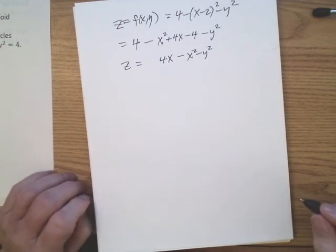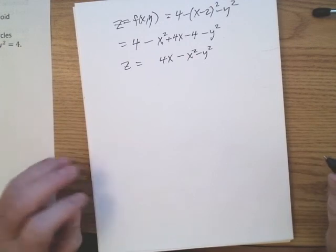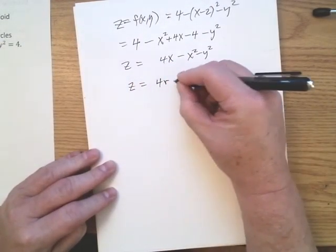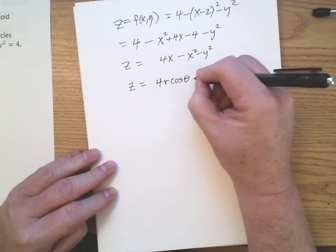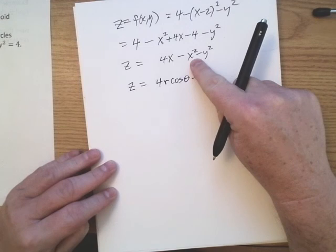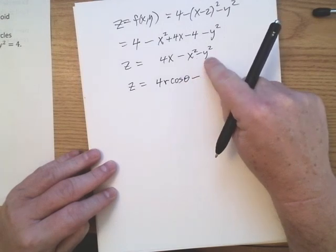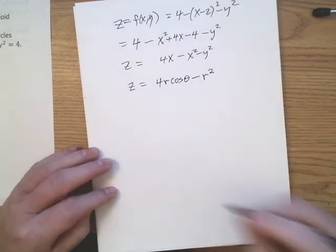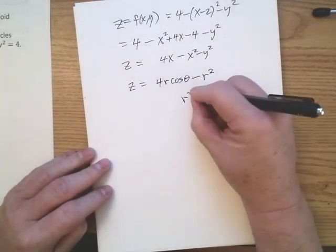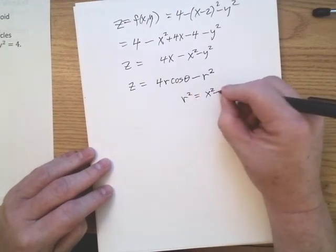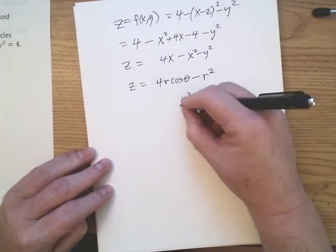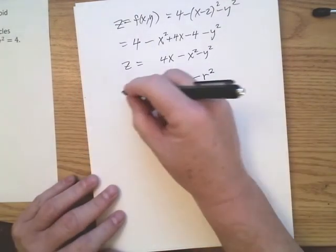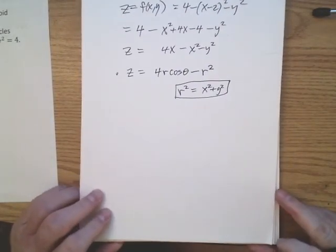In polar coordinates, x is r cosine theta, and x squared plus y squared equals r squared. So our integrand becomes four r cosine theta minus r squared. It's easier to remember r squared equals x squared plus y squared rather than converting everything to sine and cosine individually. That will be our integrand.